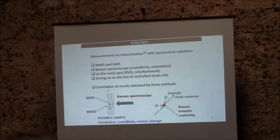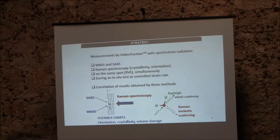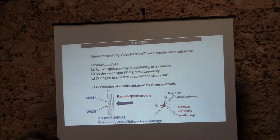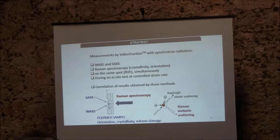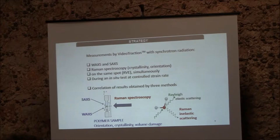For those not familiar with Raman spectroscopy: we send a photon onto a polymer sample and there is an interaction of light with matter. The matter scatters the light in two ways — Rayleigh scattering, which is elastic and not of interest for us, and inelastic Raman scattering on the Stokes side, which is what we use. We send the laser probe onto the sample, collect the scattered light with an optical fiber, and get simultaneous data on the same representative volume element during an in-situ test at a controlled strain rate — yielding information on macromolecular orientation, crystallinity variation, and volume damage up to the break.